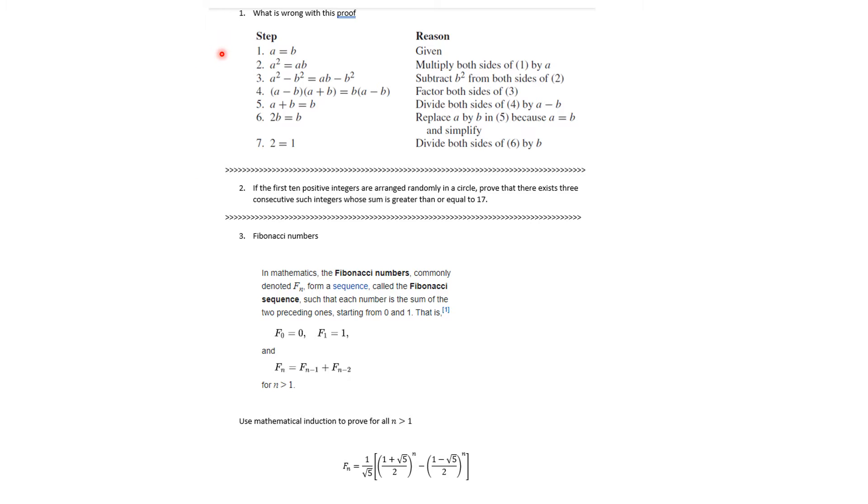So here is the statement of it. There were three things you're supposed to say what was wrong with this proof. And number two, if the first 10 positive integers are arranged randomly in a circle, prove that there exist three consecutive such integers whose sum is greater than or equal to 17. And there was an induction proof about Fibonacci numbers.